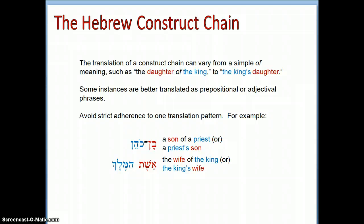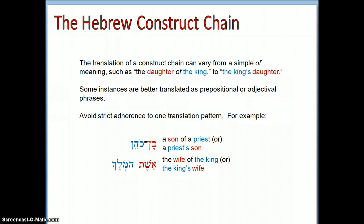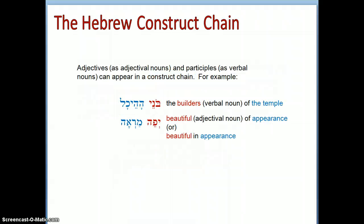The translation of a construct chain can vary from a simple 'of' meaning, such as 'the daughter of the king,' to a possessive form like 'the daughter's king.' Some instances are better translated as prepositional or adjectival phrases, so avoid strict adherence to one translation pattern. For example, instead of 'a son of a priest,' you can say 'a priest's son.' Or instead of 'the wife of the king,' you can say 'the king's wife.'